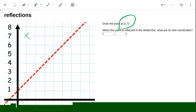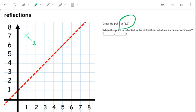Now I've got to reflect it in the dotted line. In order to do that, I should start moving towards the line.